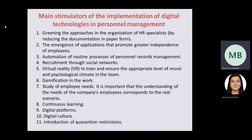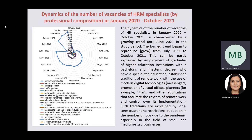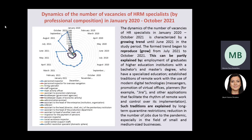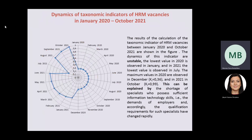The dynamics of the number of vacancies of HR specialists from January 2020 to October 2021 is characterized by a growing trend until June 2021 in the third period. Such trends are explained by long-term quarantine restrictions and a reduction in the number of jobs due to the pandemic, especially in the field of small and medium-sized businesses. Slide 6 presents the generalized dynamics of vacancies in HR specialists of all categories.